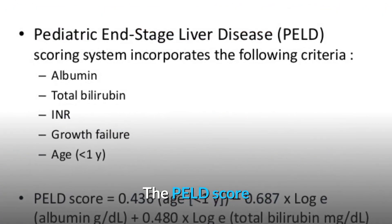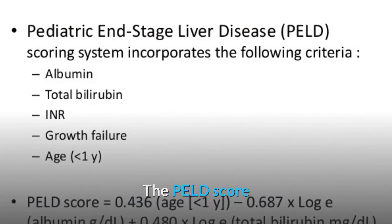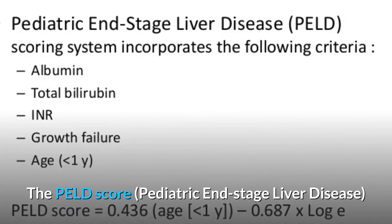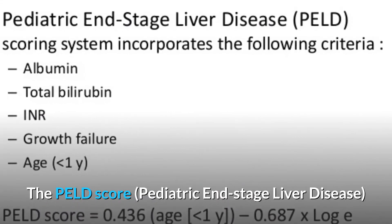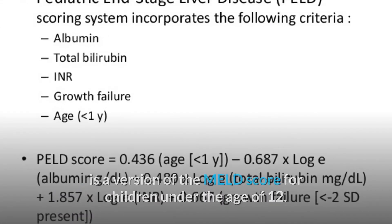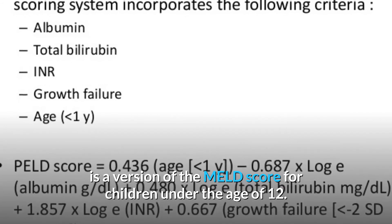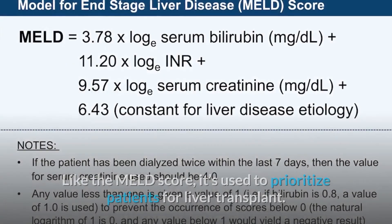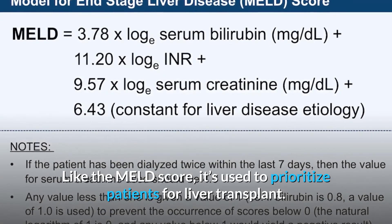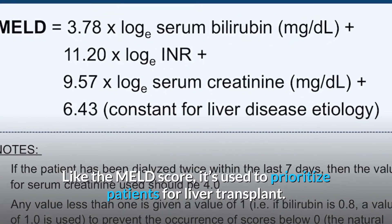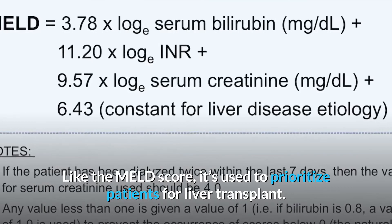The PELD score — Pediatric End-Stage Liver Disease — is a version of the MELD score for children under the age of 12. Like the MELD score, it is used to prioritize patients for liver transplant.